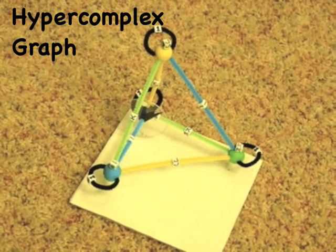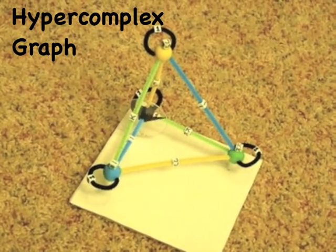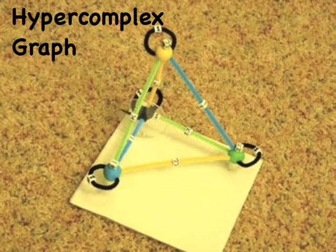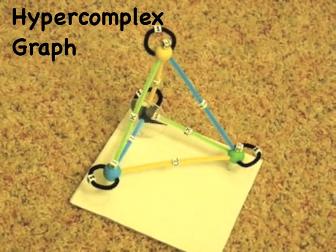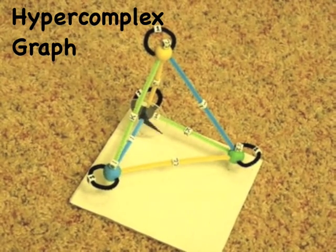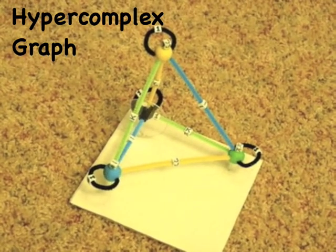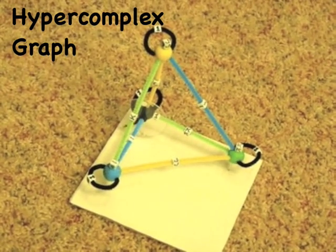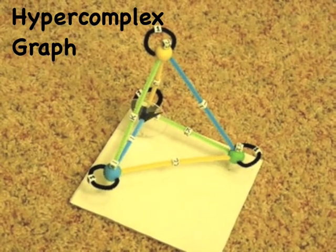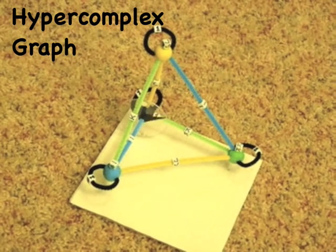This is the graph for hypercomplex numbers. Ten undirectional edges in all. Hypercomplex numbers are totally obscure. Quaternions play only a few bit parts having to do with 3D rotations. Real and complex numbers, on the other hand, are central to mathematical physics.